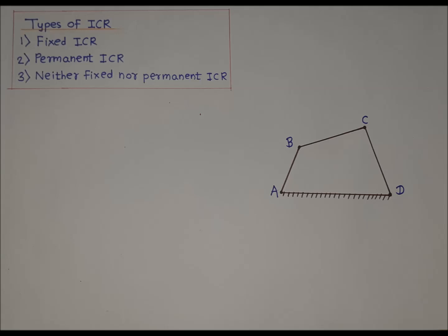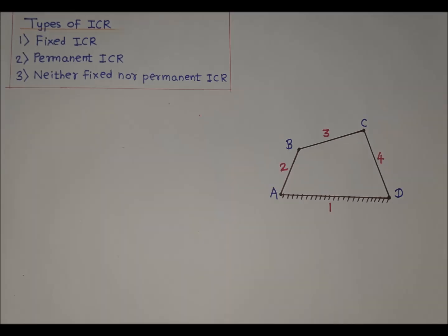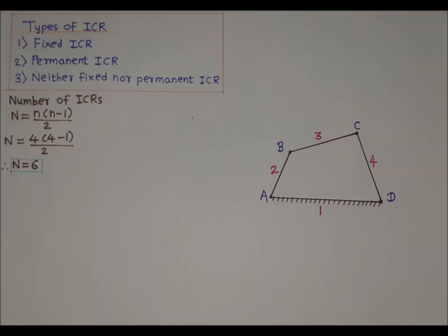Link AD is the fixed link. Let us assign numbers to the links: fixed link AD is link number one, input link AB is link number two, coupler link BC is link number three, and output link CD is link number four. The number of ICRs is given by the relation N equals n times (n minus one) divided by two.